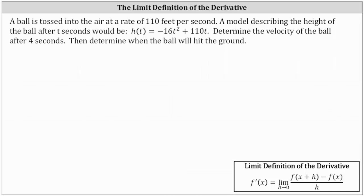A ball was tossed into the air at a rate of 110 feet per second. A model describing the height of the ball after t seconds would be h of t equals negative 16t squared plus 110t. Determine the velocity of the ball after four seconds, then determine when the ball will hit the ground.